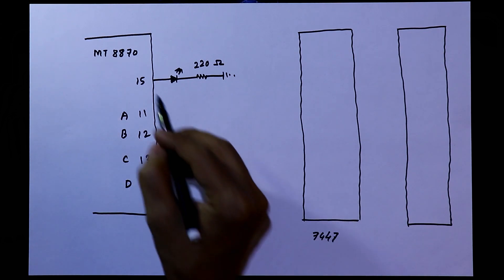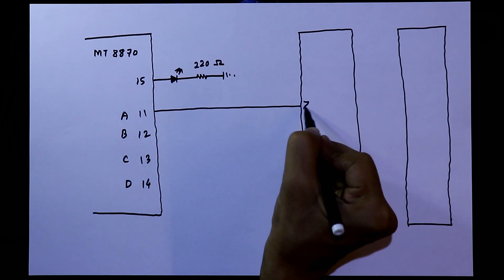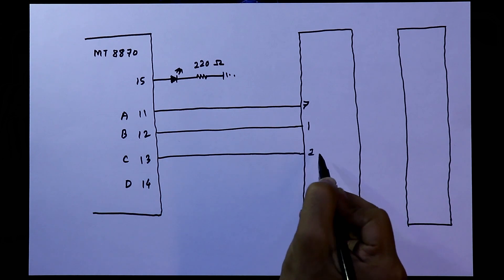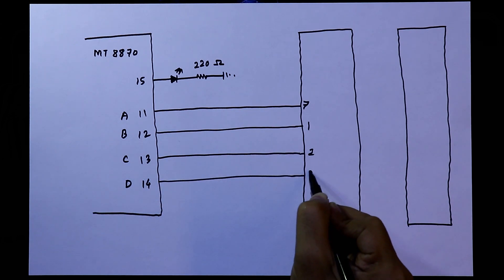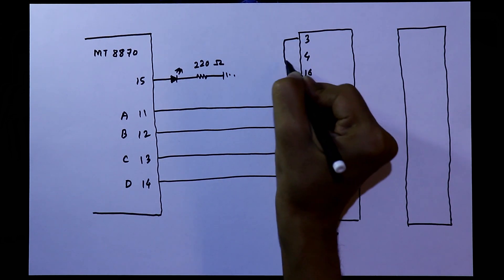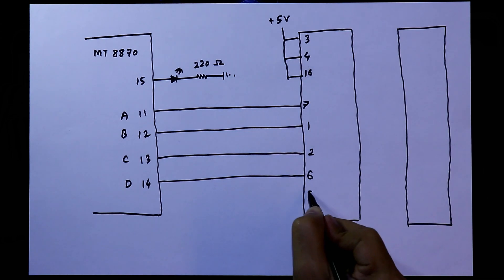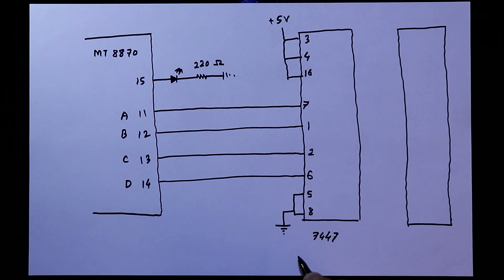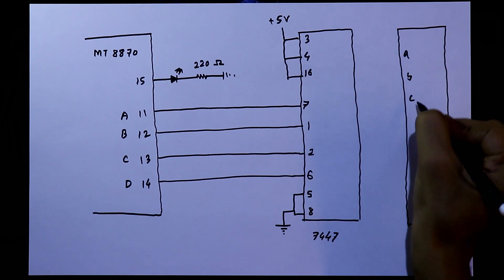Pin number 11 of the MT8870 is connected to pin number 7 of the 7447, pin 12 to pin 1, pin 13 to pin 2, and pin 14 to pin 6. Pins 3, 4, and 16 of the 7447 are connected to positive 5 volts, and pins 5 and 8 are connected to ground.